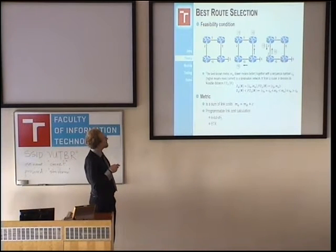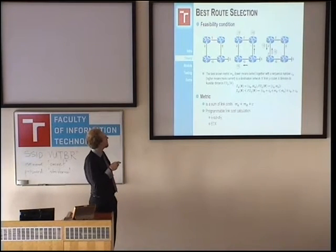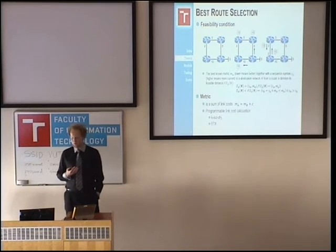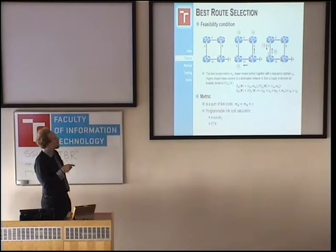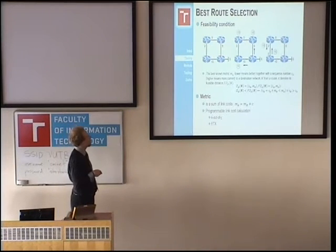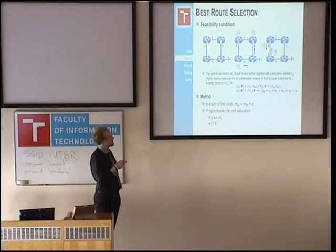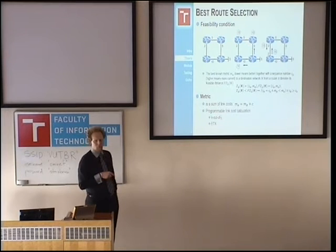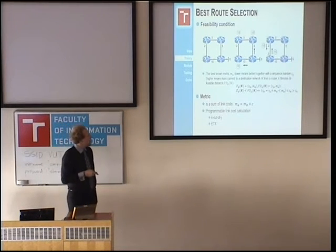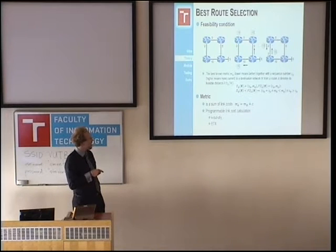BABEL uses, just like EIGRP, something called the feasibility condition to decide whether, when taking routing information from a neighbor, you are creating a routing loop. We have a router and a network, and we measure a metric through multiple next hops — for instance, 3+5+5+5 equals 13 on one path versus 15 on another. Based on this metric and information provided by neighbors about their own distance to the destination, we can decide whether a routing loop is being created.